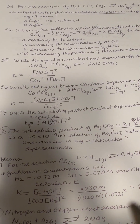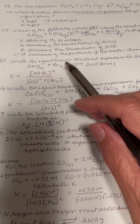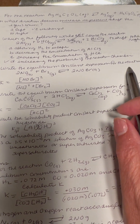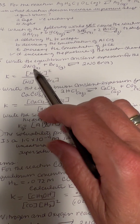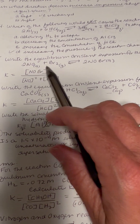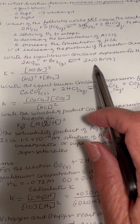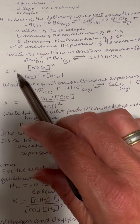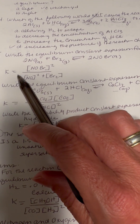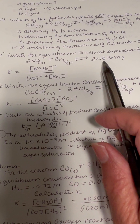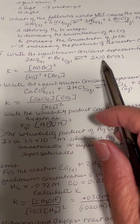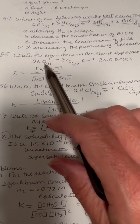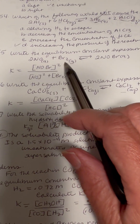Number 55: write the equilibrium constant expression for the reaction. Here we have our equation. For the equilibrium constant, you're going to take the products and put them as the numerator, and then put the reactants as the denominator.